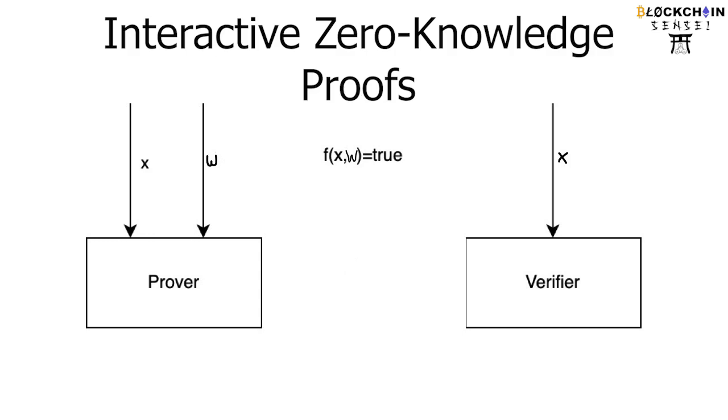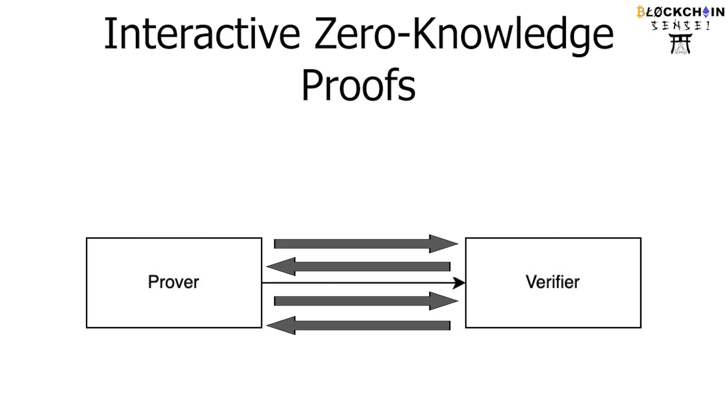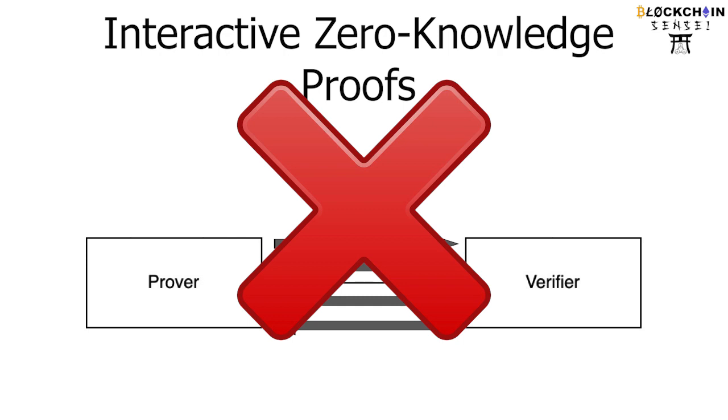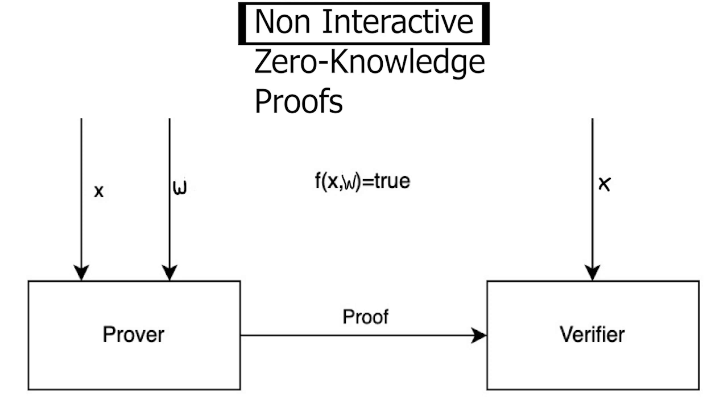This is in contrast to a similar proof known as ZK-STARK, which stands for zero-knowledge succinct interactive argument of knowledge, which uses similar proofing. However, in its case, the verifier and prover communicate to each other multiple times. STARKs have their own uses; however, in this video we're not focusing on these interactive proofs. We are looking at non-interactive proofs only.